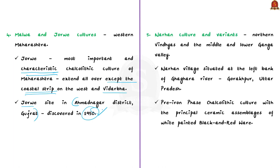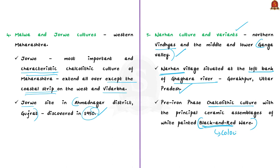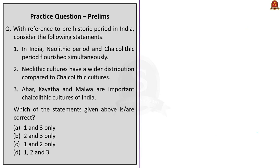Finally, we have the Narhan culture and its variants, found in the northern Vindhyas, middle Ganga valley, and lower Ganga valley. This culture derives its name from a small village of Narhan, situated on the left bank of the river Ghaghra in the Gorakhpur district of Uttar Pradesh. Notably, the Narhan culture is a pre-Iron phase Chalcolithic culture and included ceramic assemblages of white-painted black-and-red ware. These are the key points about the Neolithic and Chalcolithic periods and their differences.